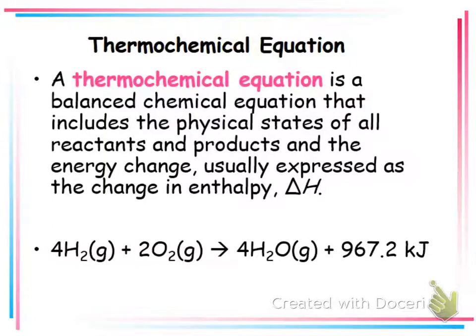If it is a product, and it's being released, we know it's an exothermic reaction. If I want to pull the number out to use it in calculations, then what would the sign of it be? Look back, what do we say about exothermic reaction? What's the sign of delta H? It would be negative. So, if I was going to pull this out and use it to calculate with, I would say it's a negative 967.2 kilojoules, because it's exothermic.